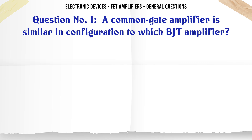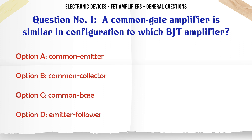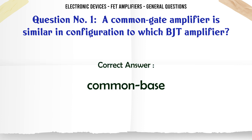A common gate amplifier is similar in configuration to which BJT amplifier? A. Common Emitter. B. Common Collector. C. Common Base. D. Emitter Follower. The correct answer is Common Base.